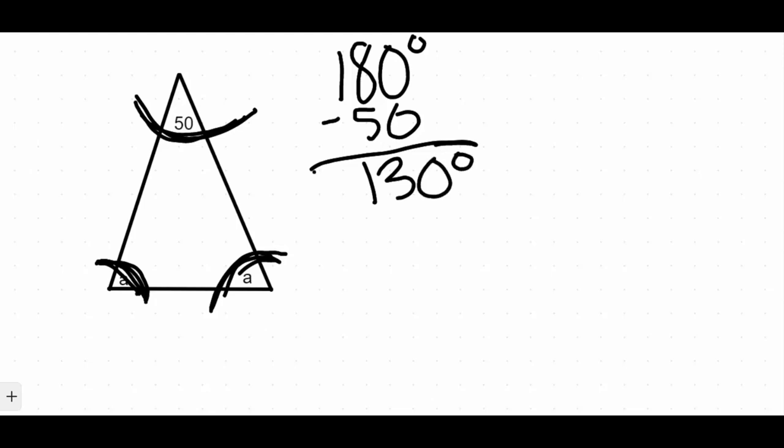Now if these two bottom angles here have to be exactly the same, what I'm going to be able to do here is I'm going to be able to take that 130 degrees, and since those other two bottom angles are exactly the same, well I'm just going to take this 130 and I'm going to divide it by 2. I'm just going to split it into two different angles, and that's going to give me the angle measure of A.